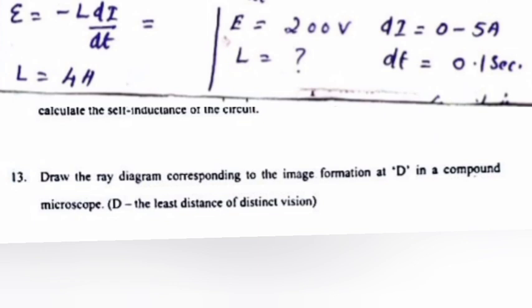Answer: E is equal to minus L di by dt. E is equal to 200 V, di is equal to 0 minus 5 A, dt is equal to 0.1 second, L is equal to 4H.